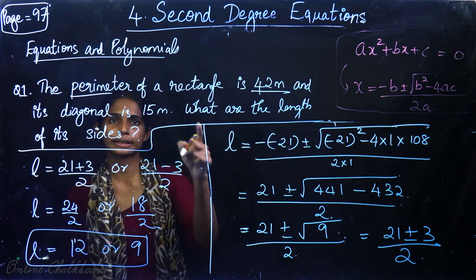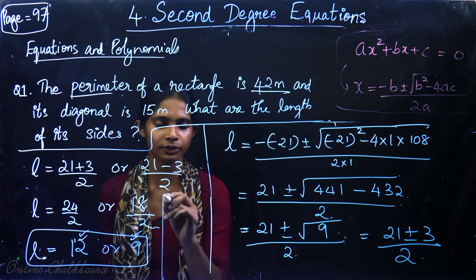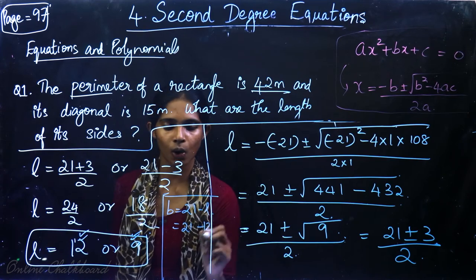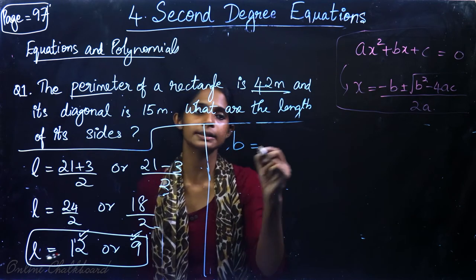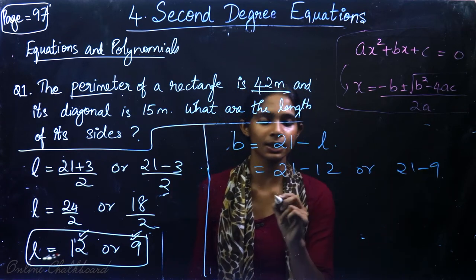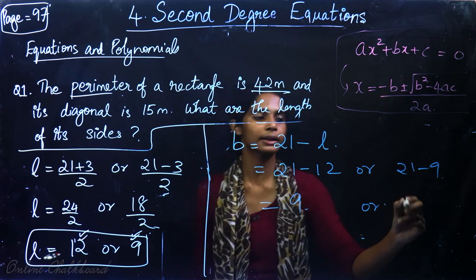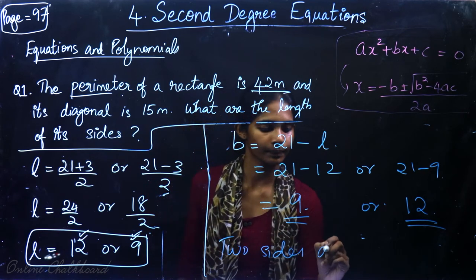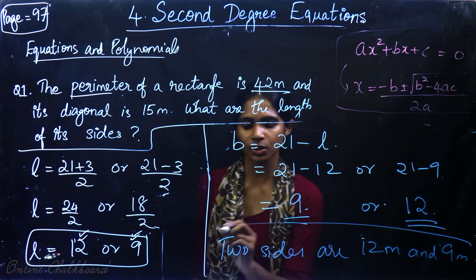So one side of the rectangle will be either 12 or 9. The length of the other side was 21 minus L. So if L is 12, the other side is 21 minus 12 which is 9. And if L is 9, the other side is 12. We can conclude that the two sides of the rectangle are 12 meters and 9 meters. This is the answer.